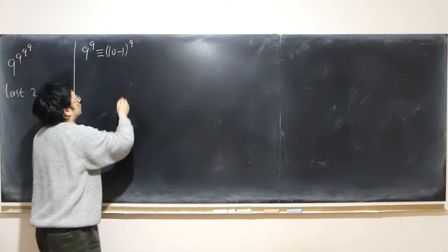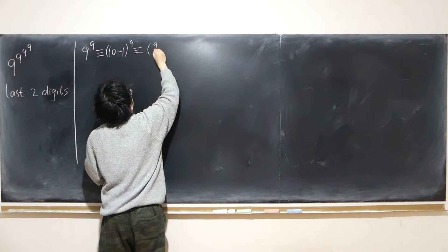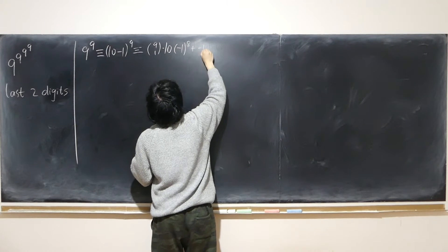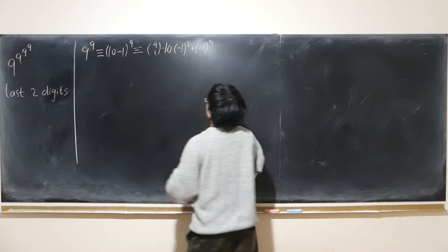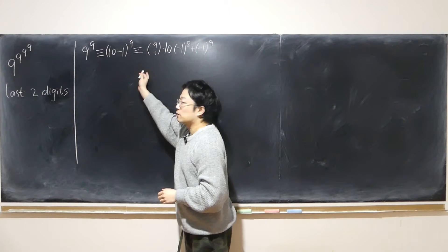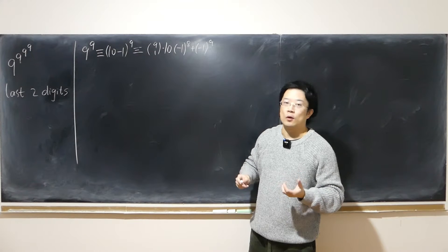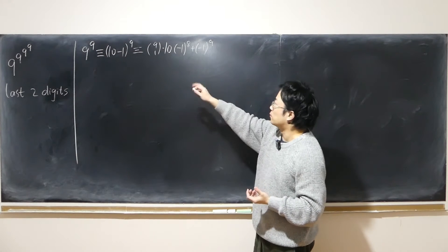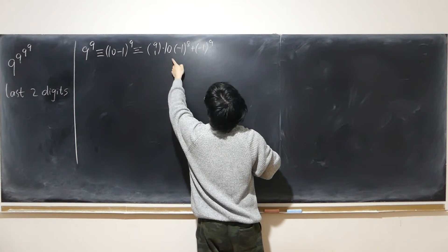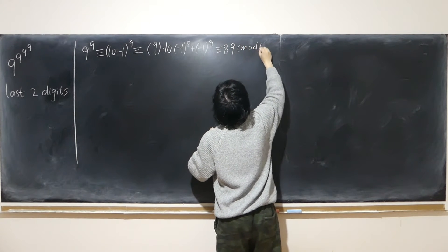But now we can use binomial expansion. I say that's congruent to 9 choose 1 times 10 times (-1) to the power of 8 plus (-1) to the power of 9. In other words, this is its remainder. Why? Because all the other terms are essentially multiples of 100 because they all contain 10 to the power of some whole number that's bigger than or equal to 2, obviously from binomial expansion. So that's 9 times 10, 90. 90 minus 1. So that's 89 mod 100.